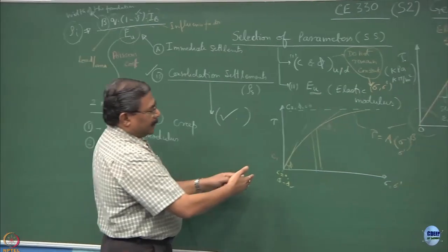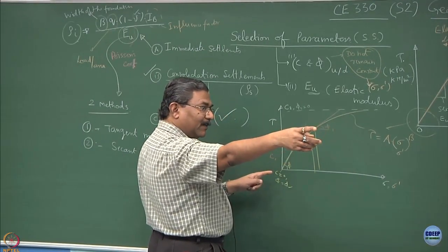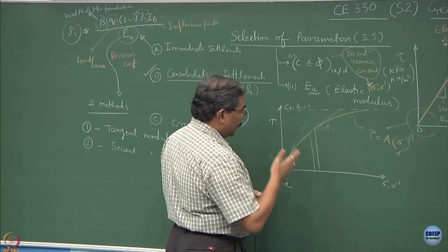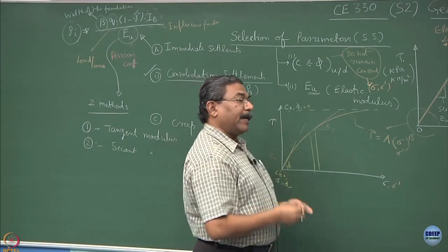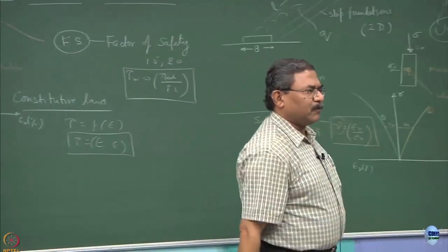Beautifully I have explained here: a material which was initially frictional, we were asking this question sometime back. What has happened? I did the same test. C and phi are nothing but the attributes of the response of the material. What is the response? If I overload you too much, what is going to happen?